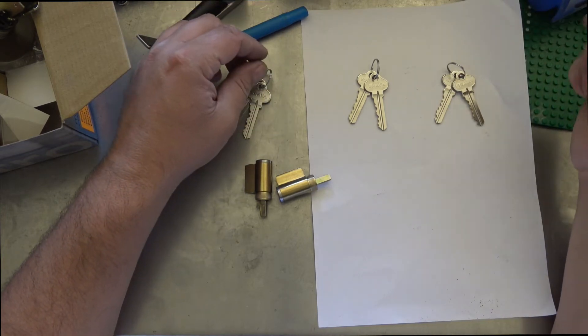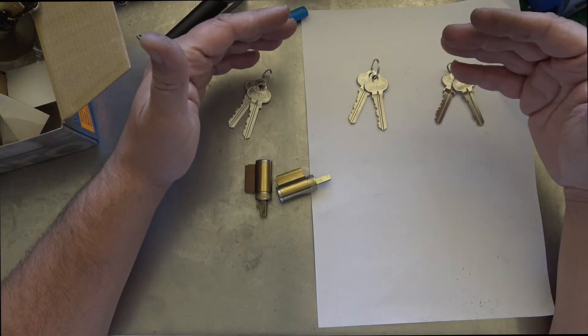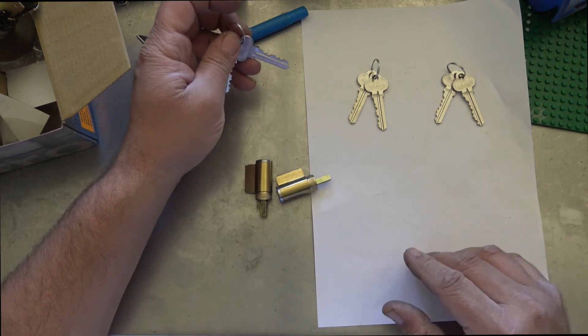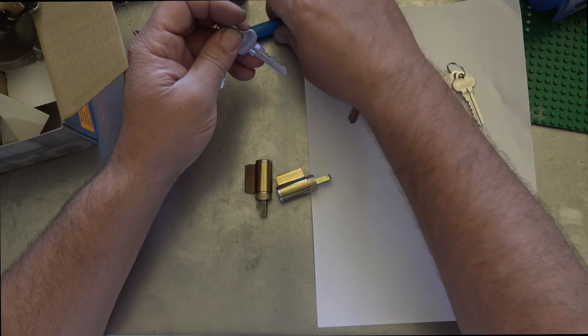So in this example here what we're going to do is we're going to find a way so that we can reuse all of these keys and just recut them. Recutting doesn't cost as much and that will sort out our needs.